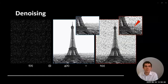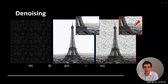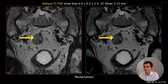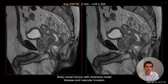Taking the noise profile from the previous image and convolving it into a normal image illustrates the ARDL effect: it doesn't help identifying high-intensity signals but significantly improves visibility in low-contrast areas. An oblique T2 fast spin echo at 0.5 × 0.5 × 2 mm slice thickness shows much better contrast on the ARDL image for a small rectal tumour. A sagittal steady-state FSE shows a bulky rectal tumour with extensive nodal disease and vascular invasion; with ARDL, boundaries and vessels are easier to see.